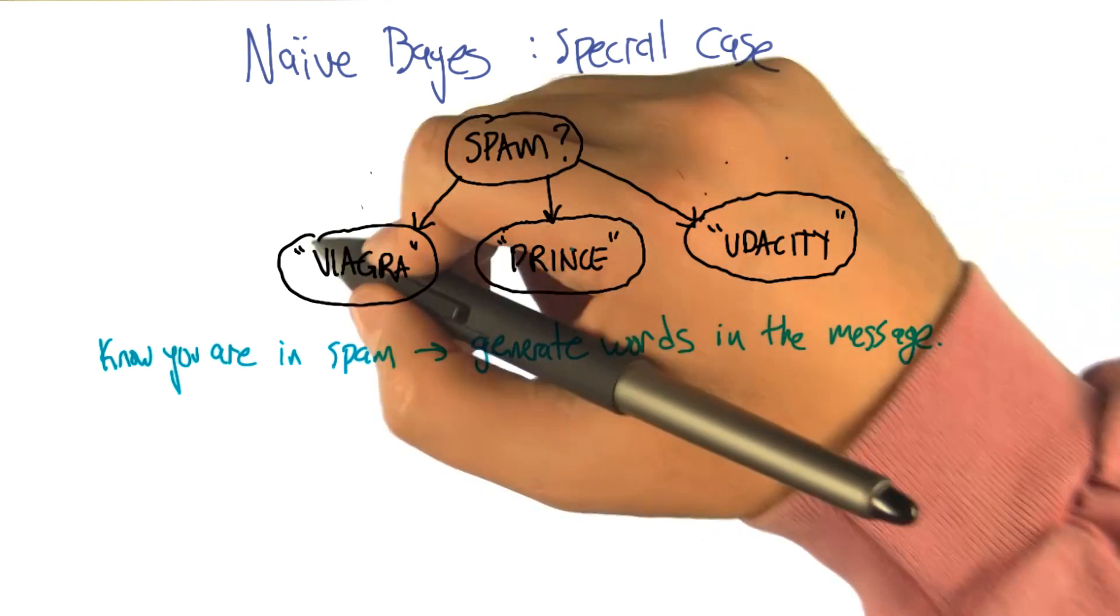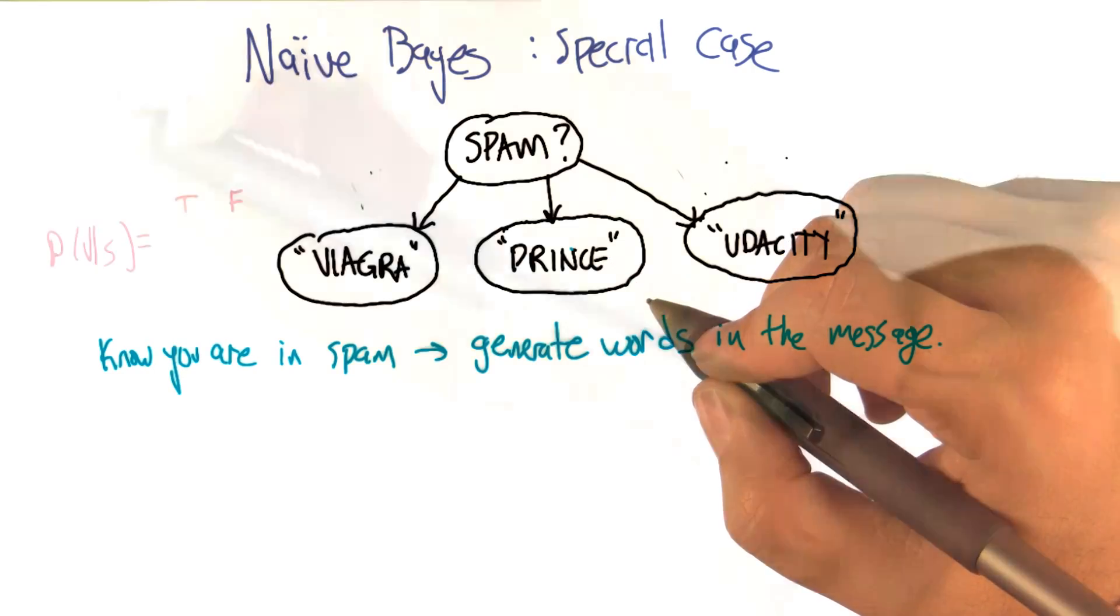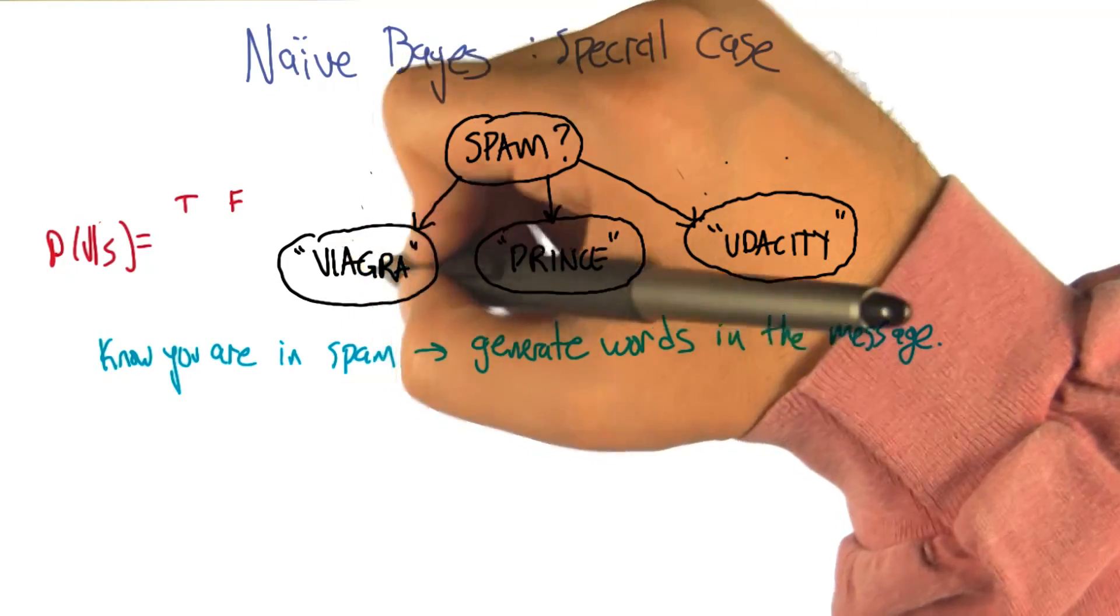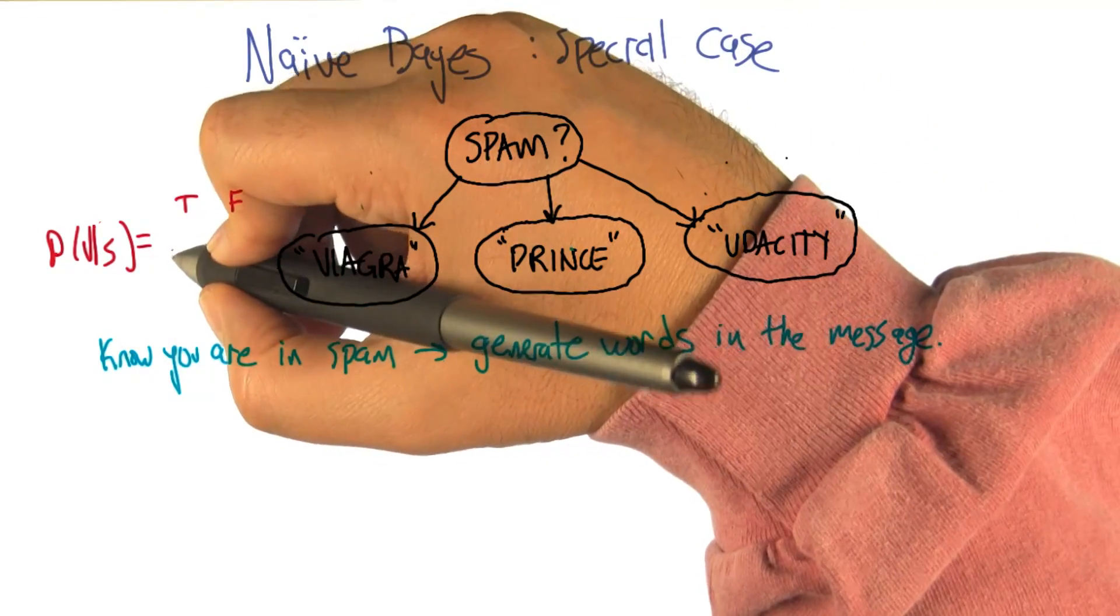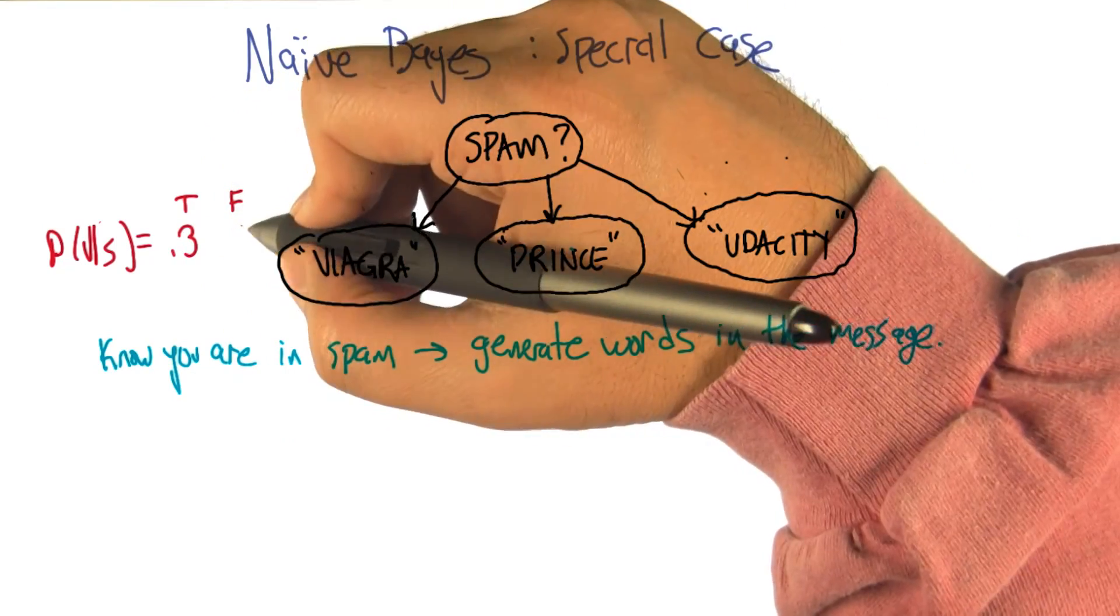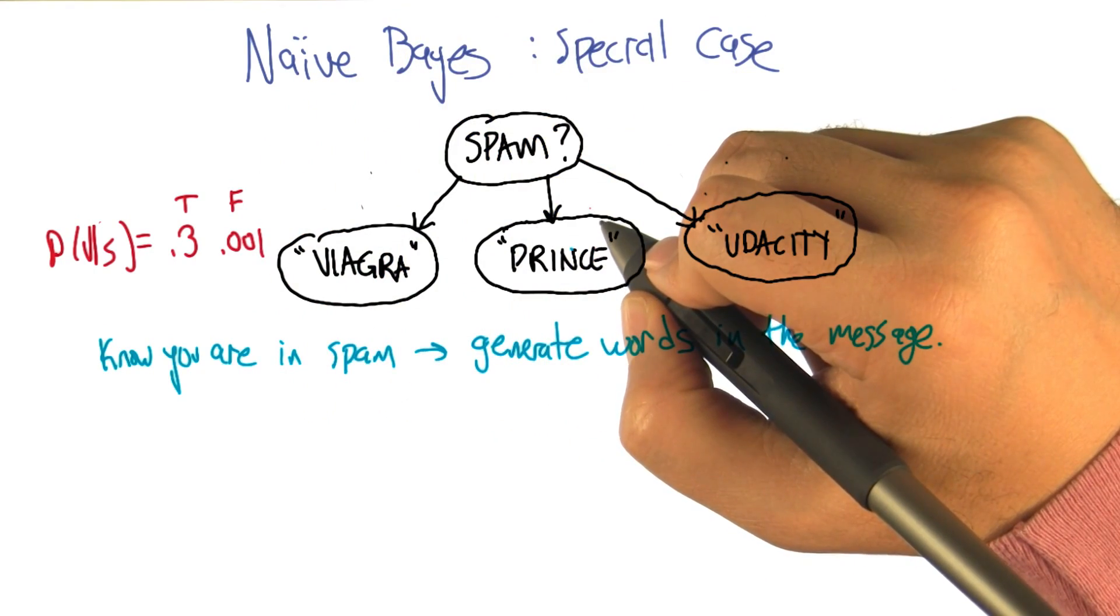In some sense, what we're saying, if we draw the base net in this way, is that any given email message has some probability of being spam. And given that it's spam, it has some probability of containing different sets of possible words. So let's see if we can actually fill in some of these values. Given that we have a spam message, how likely do you think it would be to contain a word like Viagra? Fairly high. So it might be something like 0.3, but a non-spam message might be like 0.001.